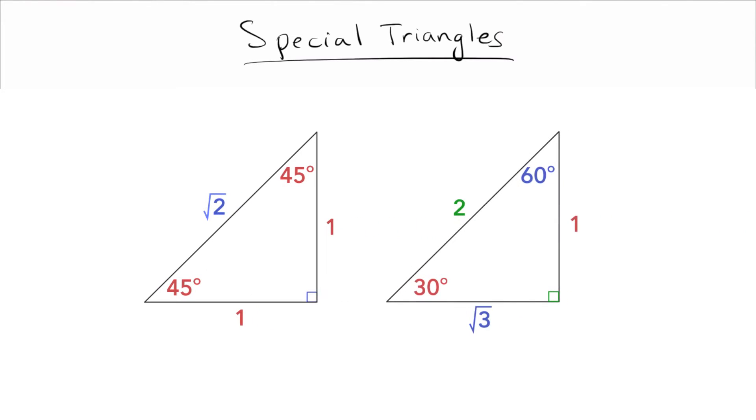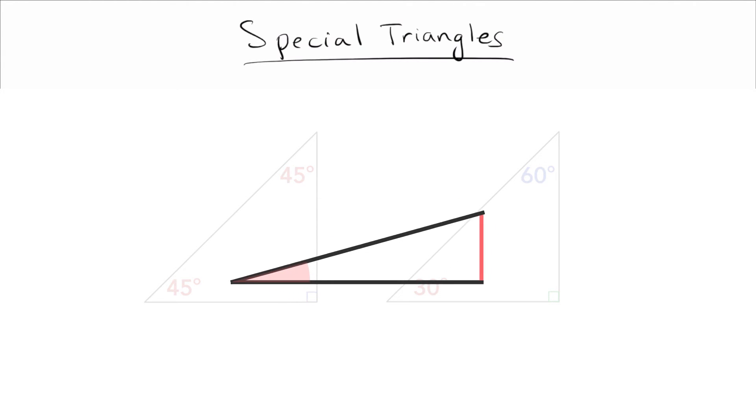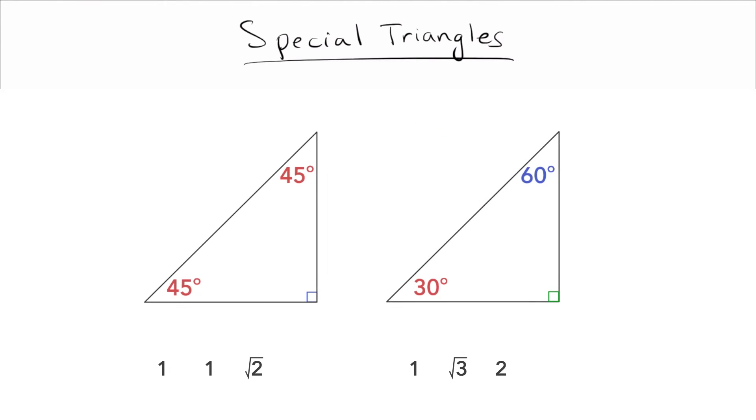So here, I have put the 1, 2, and the square root of 3 on these certain sides on the triangle. Well, how did I know where they go? Did I just memorize it, or is there a better way? And there is a better way. What it is, is on a triangle, a small angle will open up to a small side. So I look at my 30-60-90 triangle here. I look for the smallest angle. That's 30 degrees, obviously. So 30 degrees opens up to the smallest side.